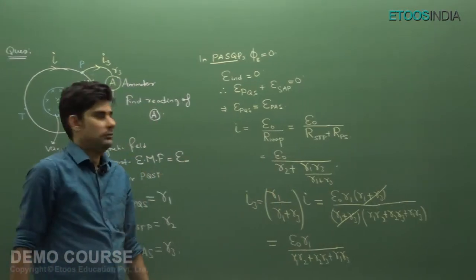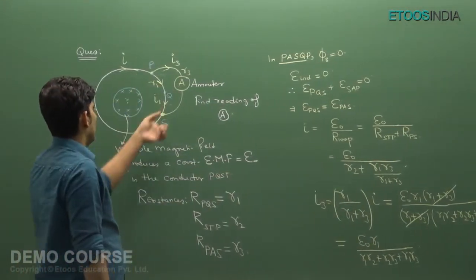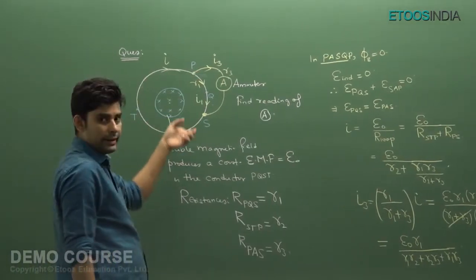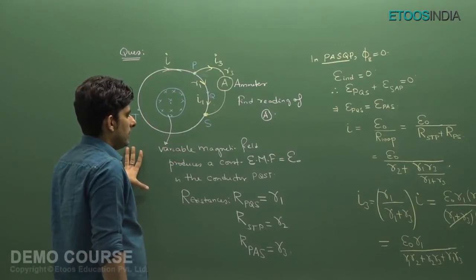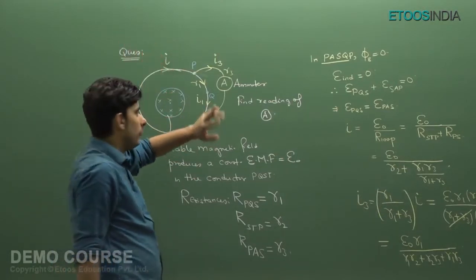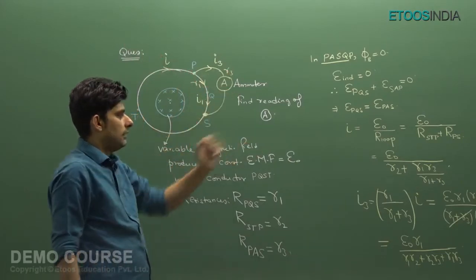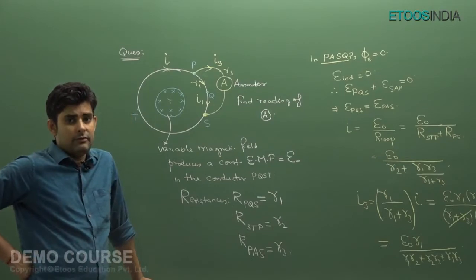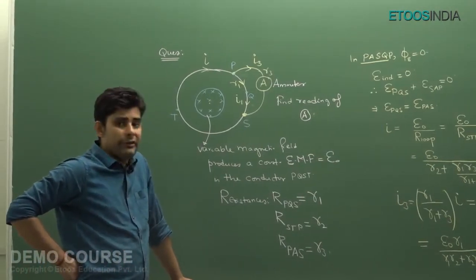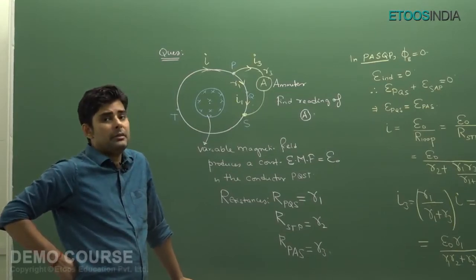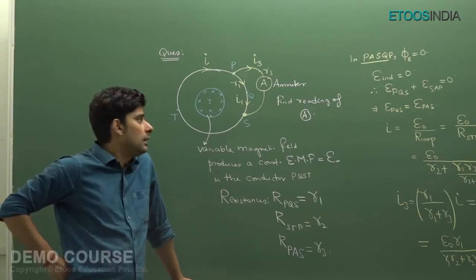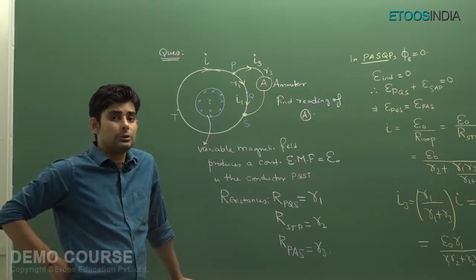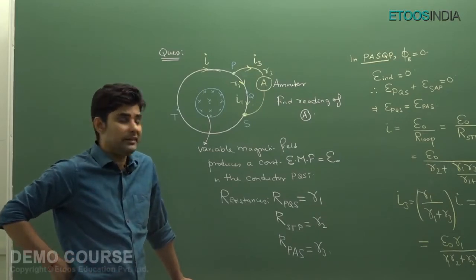So the current through the ammeter is I3 = E₀·R1 / (R1·R2 + R2·R3 + R1·R3). This is how we can proceed in such questions. The total EMF of the loop was given and we found the total current, then divided it into two parts. There is also an alternate method using circuit concepts. When a non-conservative field is present, applying KVL means the net EMF for the entire loop equals the induced EMF E, not zero.